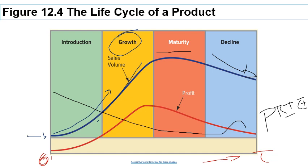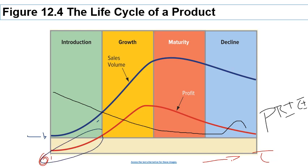Notice that profits move slightly differently than sales. In the beginning stages, even though sales are growing, profits are going to be negative — you are going to be losing money — because demand is low and you have to invest heavily in advertising just to make sure people are buying the product. You start making money in the growth and mostly in the maturity stage. That's where you make most of your money. Then at the end, money comes down as demand declines.